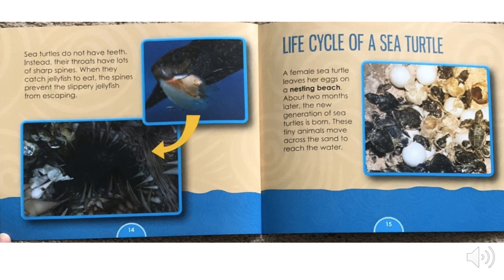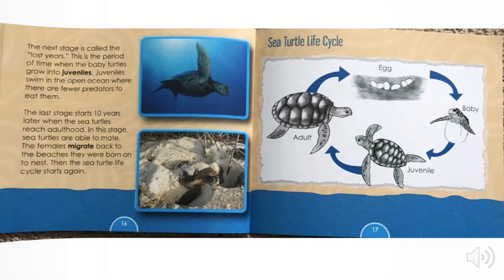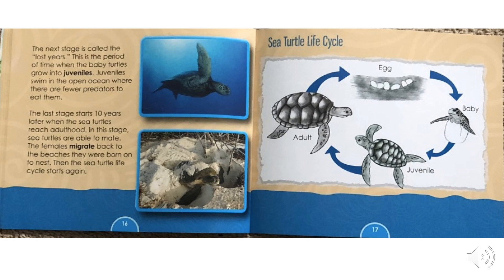Life cycle of a sea turtle. A female sea turtle leaves her eggs on a nesting beach. About two months later, the new generation of sea turtles is born. These tiny animals move across the land to reach the water. The next stage is called the lost years — the period of time when the baby turtles grow into juveniles. Juveniles swim in the open ocean where there are fewer predators. The last stage starts ten years later when the sea turtles reach adulthood. In this stage, sea turtles are able to mate. The females migrate back to the beaches where they were born to nest. Then the sea turtle's life cycle starts again.